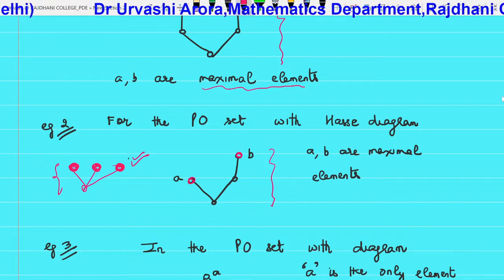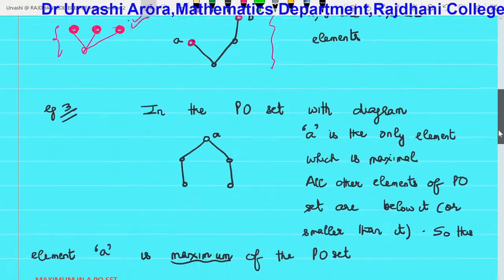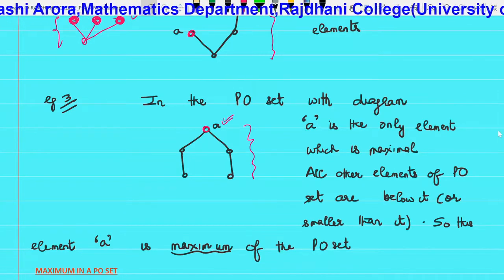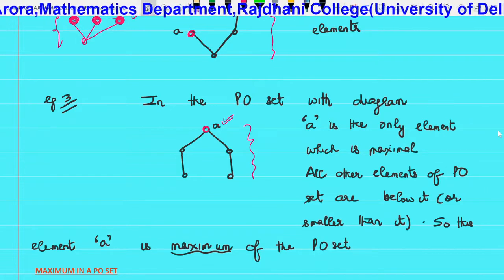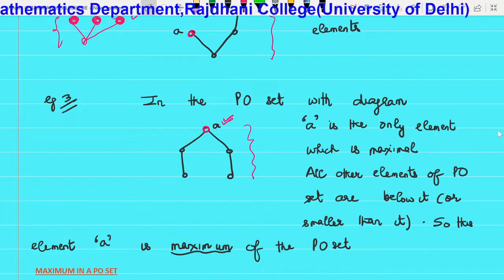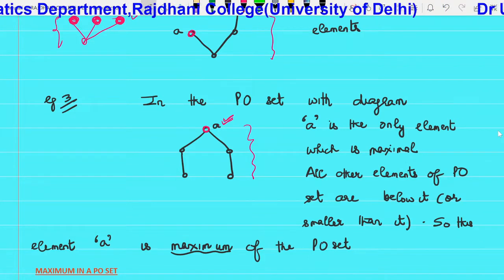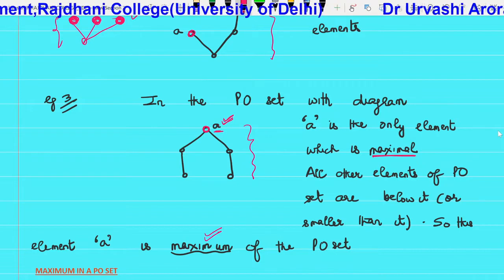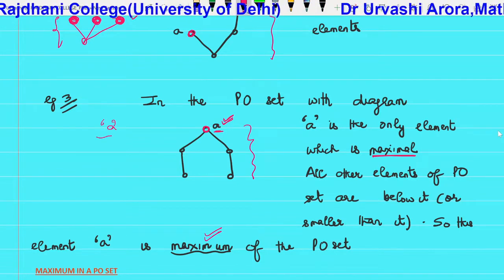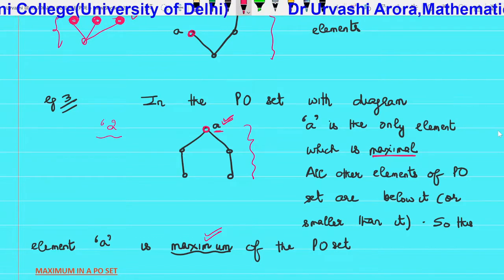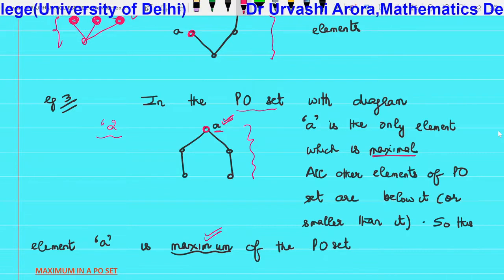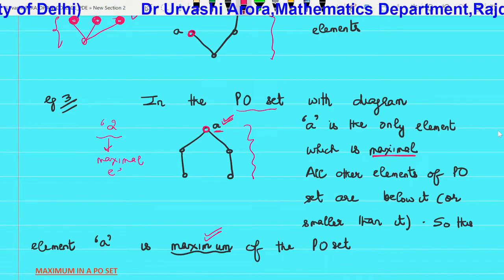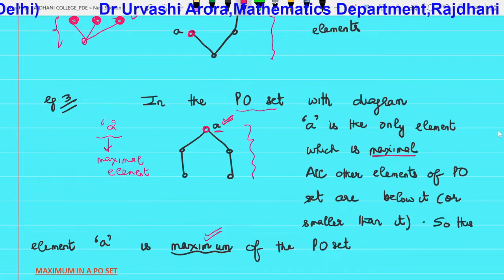So a PO set can have more than one maximal element. Coming to Example 3: this is the Hasse diagram of a PO set with one maximal element A at the top, and there is no element greater than it. A is a maximal element and the only maximal element. When there is only one maximal element like A, then this element is not only the maximal element but it is also called the maximum of the PO set.